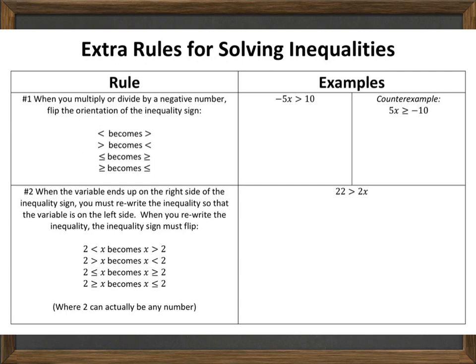So let's do some examples. One example is negative 5x is greater than 10. To solve this, just as I would an equation, I have to divide both sides by negative 5. Negative 5x divided by negative 5 is simply x. 10 divided by negative 5 is negative 2. However, note that I just divided by a negative number, which activates this extra rule. So this greater than sign has to transform — it has to become a less than sign. So my final answer is x is less than negative 2.